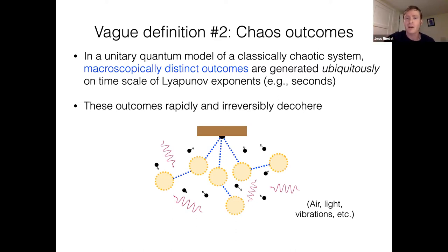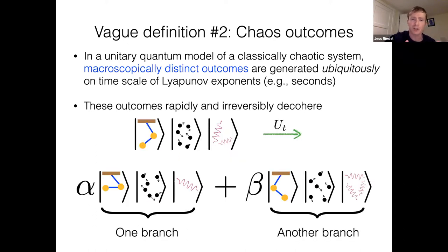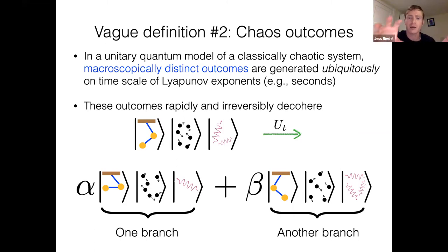When this happens, as soon as these superpositions are generated, they are decohered — and in fact it's a continuous process of both things happening simultaneously: being generated and decohering. You can think about it as the air in the room and the light shining around, or vibrations, all becoming correlated with the macroscopic configuration of this double pendulum. So the quantum description will look something like this: you start out with some configuration of the double pendulum, the air molecules and light in the room will be somehow correlated, you evolve the system, and you end up in a superposition where the air and light are in orthogonal states conditional on the macroscopic state of the system. This is what I mean by branches.